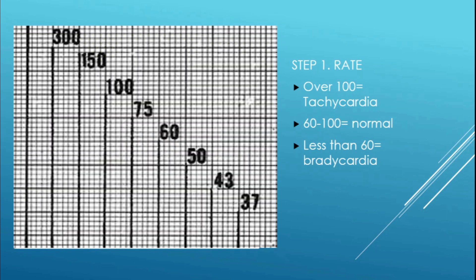Step one: rate. It's pretty self-explanatory. What is the rate of the rhythm? You find a QRS that is on a line of a big box. If the next QRS complex occurs at the next big box, the rate is around 300. If it occurs two big boxes away, it's around 150, and so on. I usually go down to 300, 150, 100, 75, 60. That gives you a good clue of whether it's fast or slow. This is called the big box method — a fairly easy way to quickly get the rate.